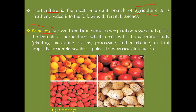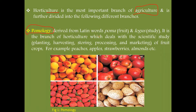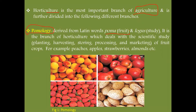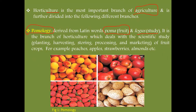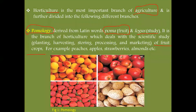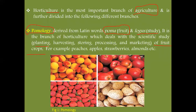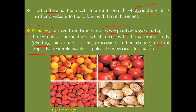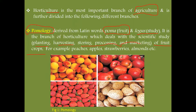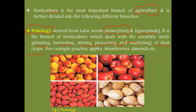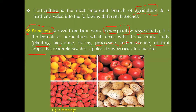Number one is pomology. The word pomology is derived from Latin words: 'poma,' which means fruits, and 'logos,' which means study. So it is the branch of horticulture which deals with the scientific study of fruit crops. This study includes the plantation, cultivation, harvesting, storing, processing, and marketing of fruits.